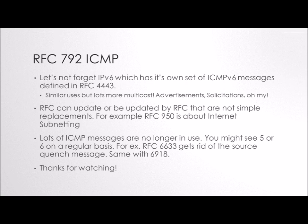Let's bring this to a close. This has been about RFC 792 ICMP. Let's not forget that when we go to IP version 6, we have the fabulous ICMPv6 that goes along with it — those are in RFC 4443. Similar use, but the difference is lots of multicast: multicast advertisements, solicitations, oh my! RFCs can update or be updated by other ones that aren't necessarily about exactly the same thing — for example, RFC 950 is actually about subnetting, but it's tied to ICMP in some way. Lots of ICMP messages are no longer in use, so there are a couple of RFCs that are deprecating some of the old ICMP messages. Thanks for watching, and may your packets always reach their destinations.